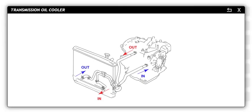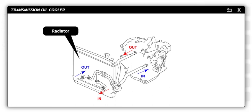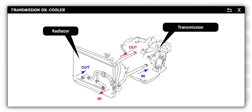The transmission oil cooler is similar to the engine cooling system's radiator, designed to remove heat from the transmission fluid before it is returned to the transmission.